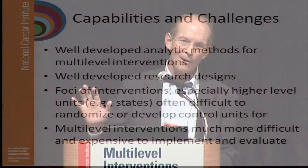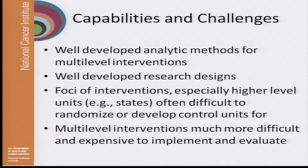I was asked to write about analytic methods. I don't think that's the issue — we have very good analytic models for hierarchical, nested, non-nested designs. We have really good statistics and really good research designs. Finding a smart statistician is not the rate-limiting step here. Thinking about what the foci are and how to get control groups to evaluate even level-specific effects — much less mediating, moderating, and synergistic effects — is really, really hard. For example, if I intervene in the entire New Haven community for HIV, what's my comparison group? How do we find it? It's tough and expensive.